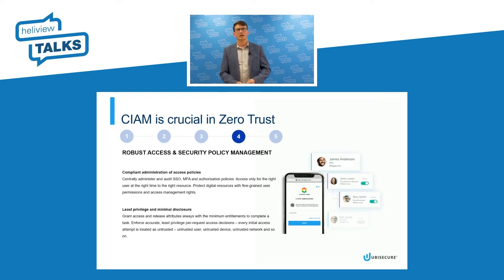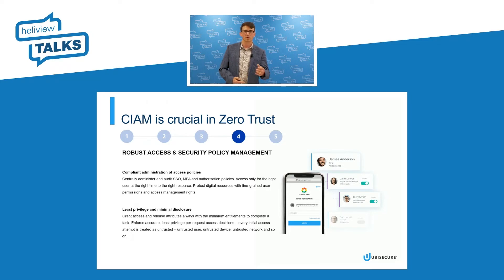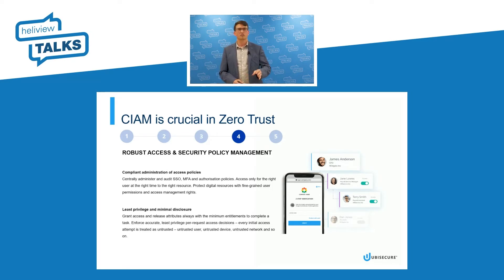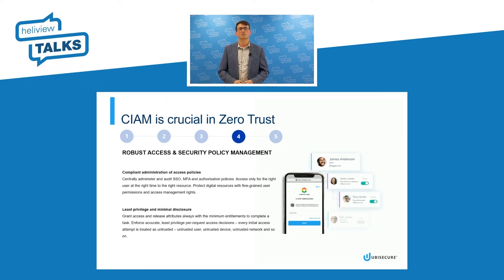The fourth topic is that the access and security policy management must be robust. CIAM is a great place to centralize policies for choosing which users get access to which resources. They get access at the right time with the right level of authentication and assurance. You want to be able to use the ideas of least privilege and minimal disclosure — making sure that users have access only to the minimum set of information that they need to complete a transaction, and not one right more. You shouldn't spread attributes or information about a user to services that don't need them. Minimal disclosure is passing only the minimum set of information about a user to third-party services.